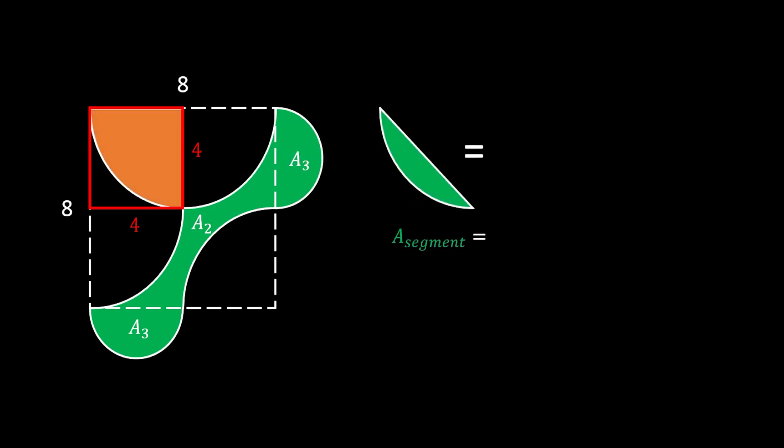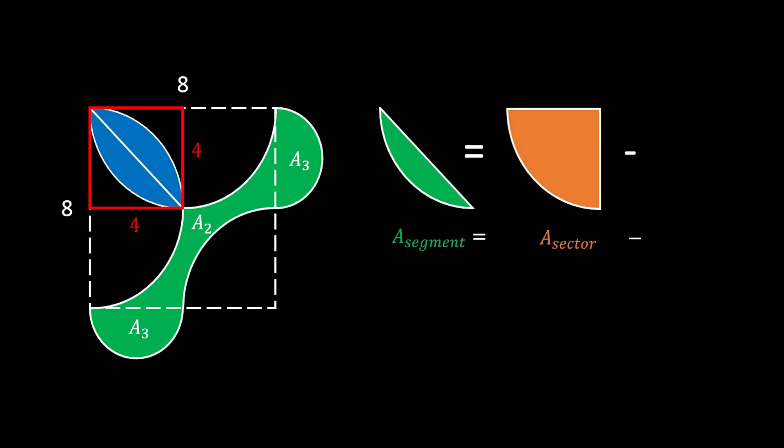So this area will be equal to the area of this orange circular sector, which actually represents the quarter of the circle with radius 4, minus this violet right isosceles triangle with legs of 4.